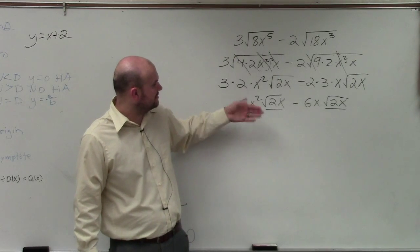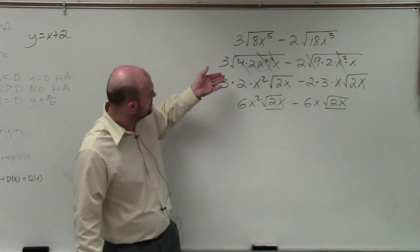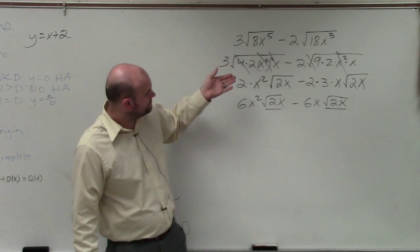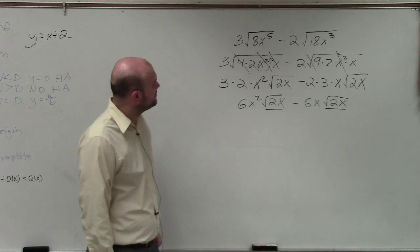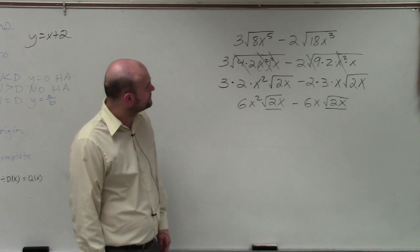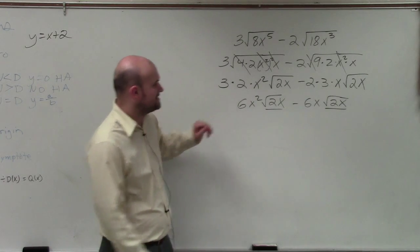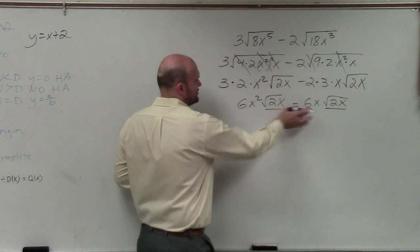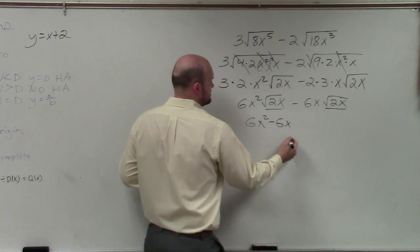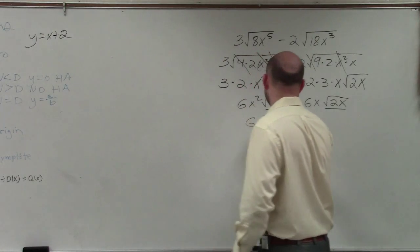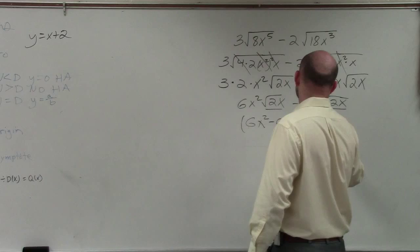So the main important thing is go ahead and I don't want to confuse you even more. Or I should have picked a different one. But basically, it's these. Unfortunately, though, I chose a problem that you can't really combine. 6x squared minus 6x. And then that's going to be times the square root of 2x.